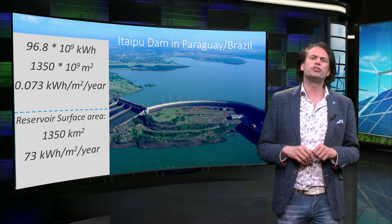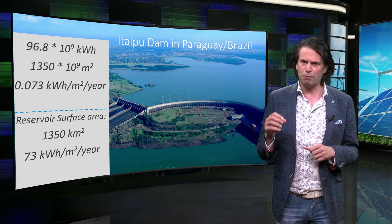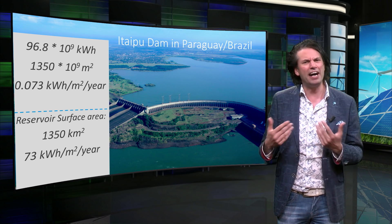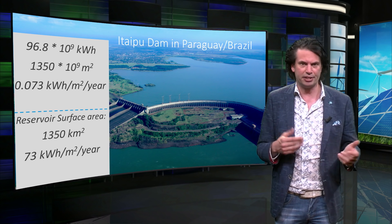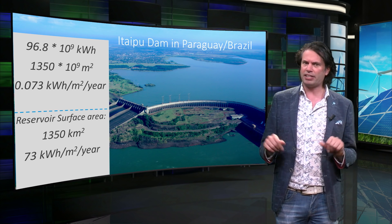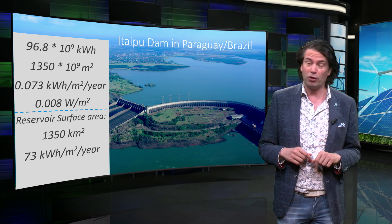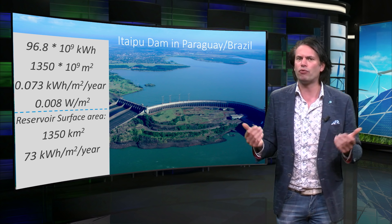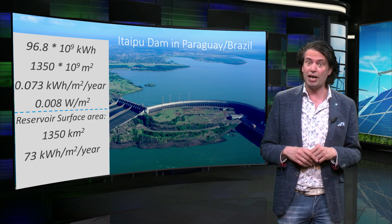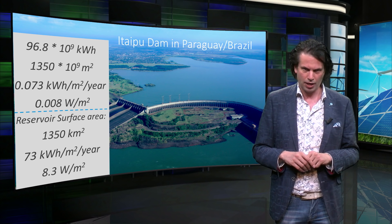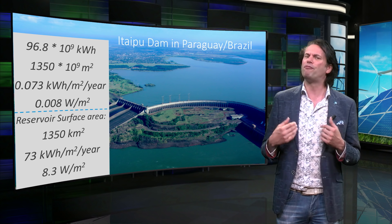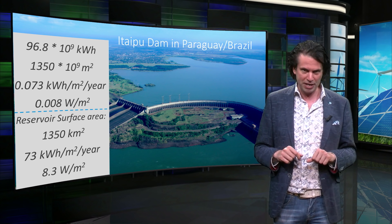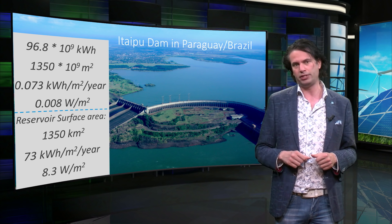It is also interesting to look at the surface power density for both defined areas. We can find this by dividing the energy density by all the hours in a year. For the entire catchment area, we get a power density of 0.008 W per square meter, or 8 mW per square meter, whereas for the reservoir surface area, we find a surface power density of 8.3 W per square meter. As you can see, with some fairly simple rough calculations, a general estimate can be made of the potential energy that can be gained from this source.